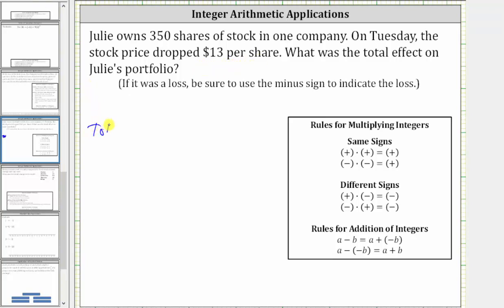So again, the total effect is equal to negative 13 times 350. A negative times a positive is negative, so we know the product is negative.